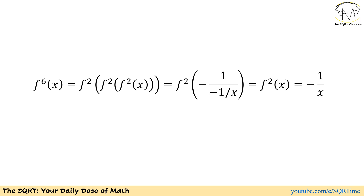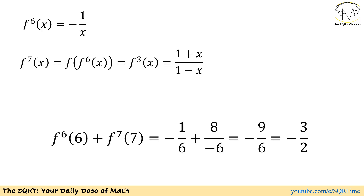Now applying another f₂ on top of this, we will end up with minus 1 over x for f₆(x). Now that we have found f₆(x), we apply one more f on top of it to find f₇(x). That is straightforward — we replace x with negative 1 over x, and we get (1 plus x) over (1 minus x) as f₇(x).